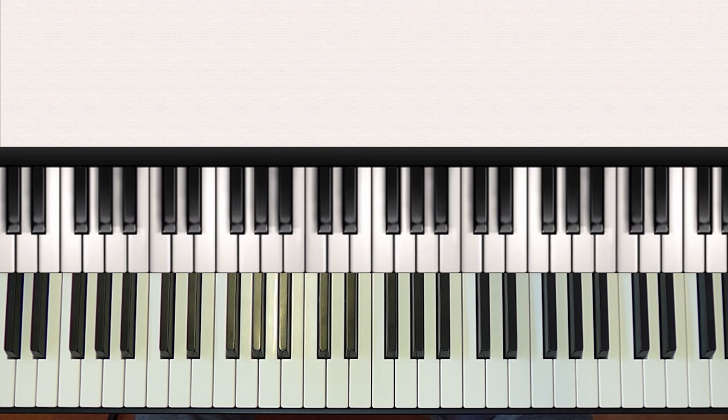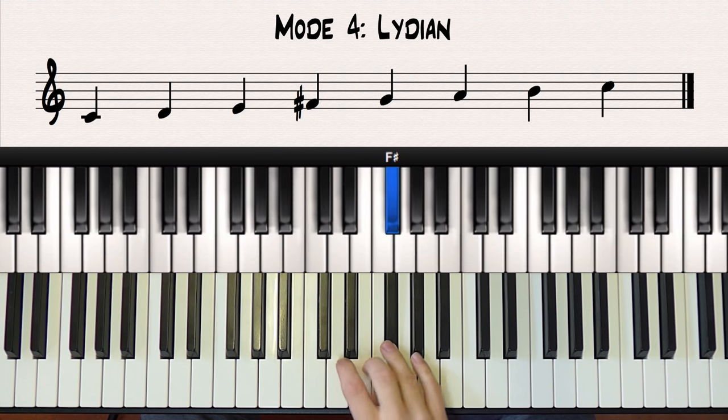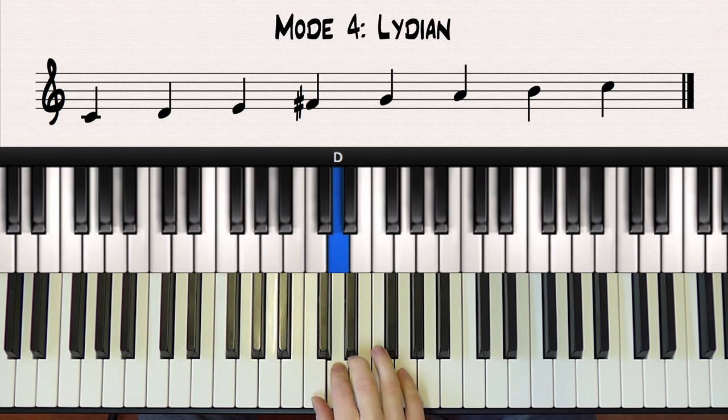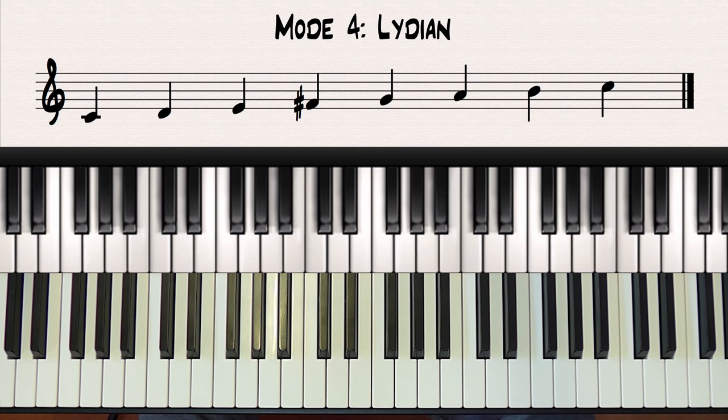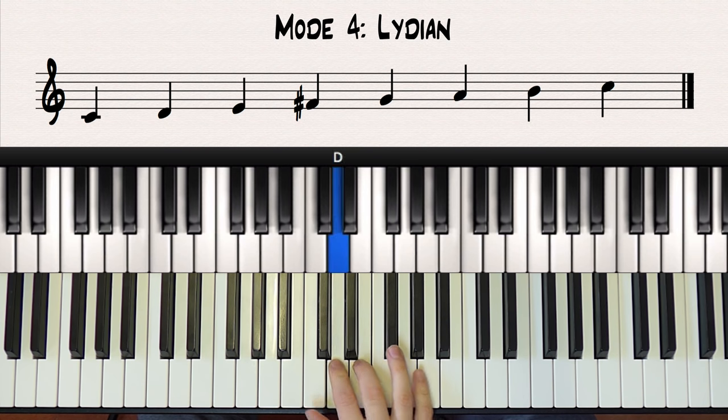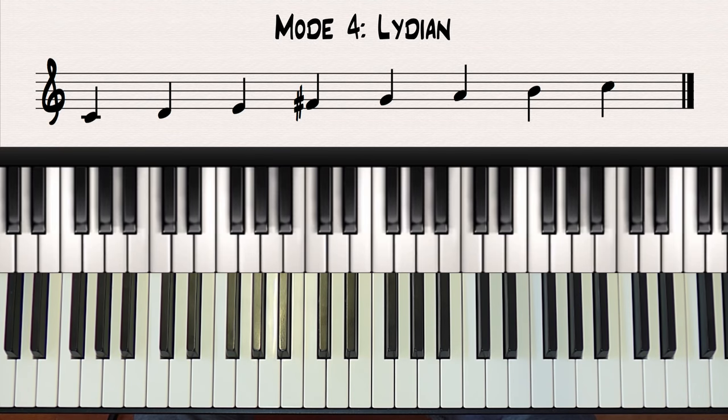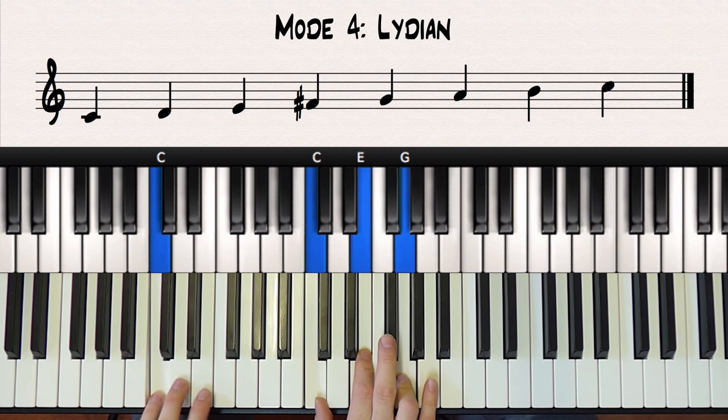Moving on to mode four we have the Lydian mode. So this is just a major scale with a sharp four, or the G major scale beginning and ending on C. This mode has a very bright sound and it's used in quite a lot of TV shows and film music. That's just one example of the Lydian mode used in a popular theme song. Some characteristic chords of the Lydian sound would be the major one chord and the major two chord.